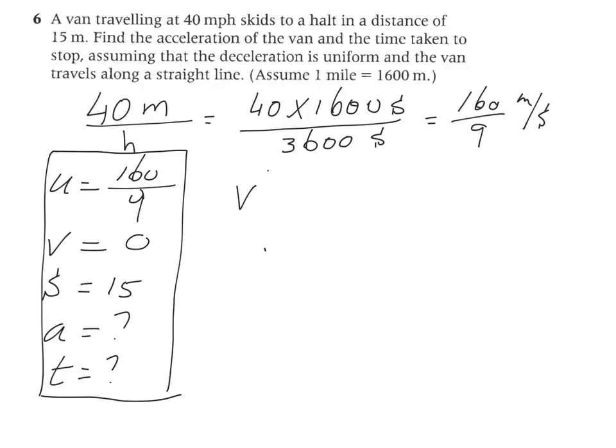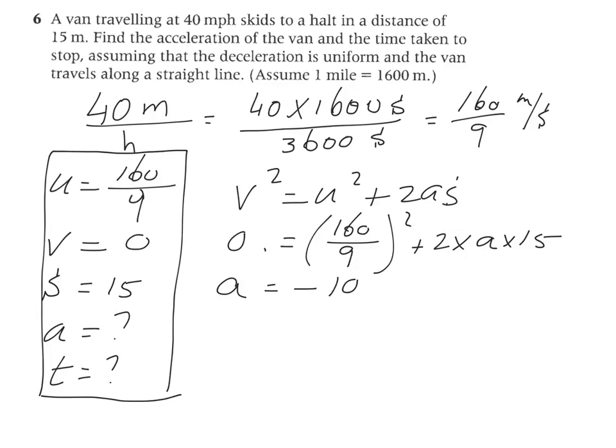You could use v squared equals u squared plus 2as to find the acceleration. So 0 equals, let's put our brackets there, 160 over 9 squared plus 2 times a times s, which is 15. And if you work it out and rearrange it properly, you get, for the acceleration, minus 10.5 meters per second squared.